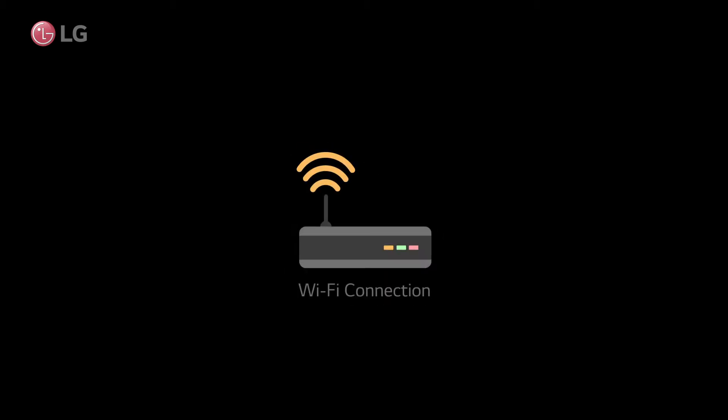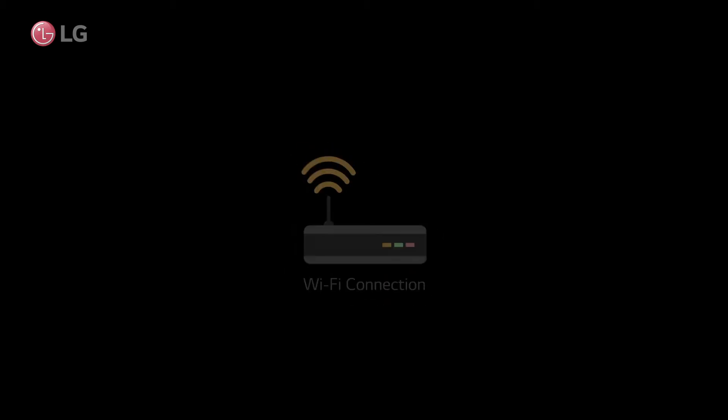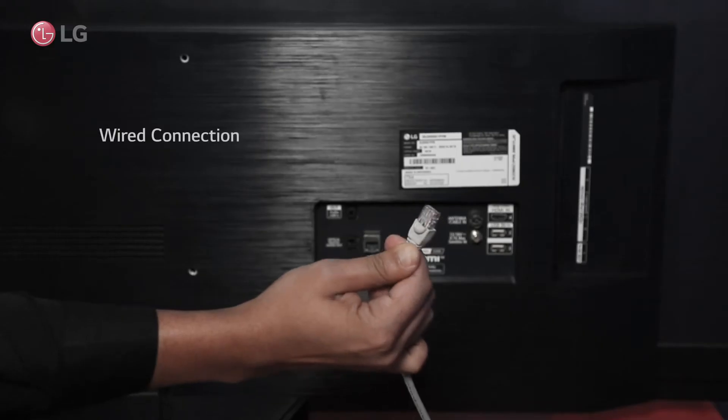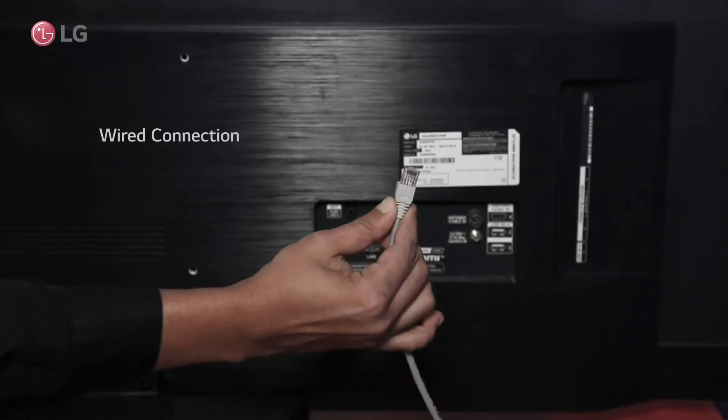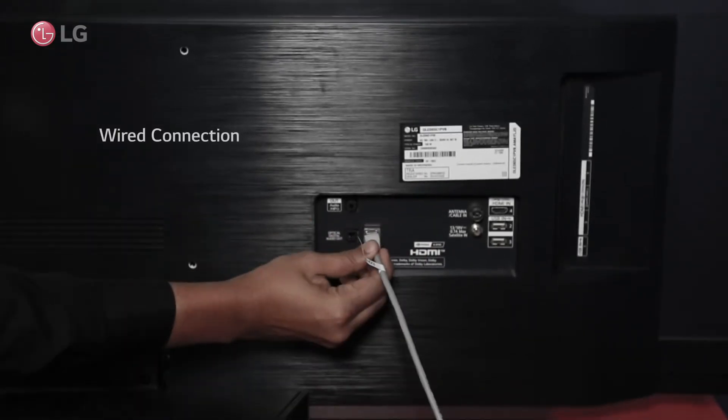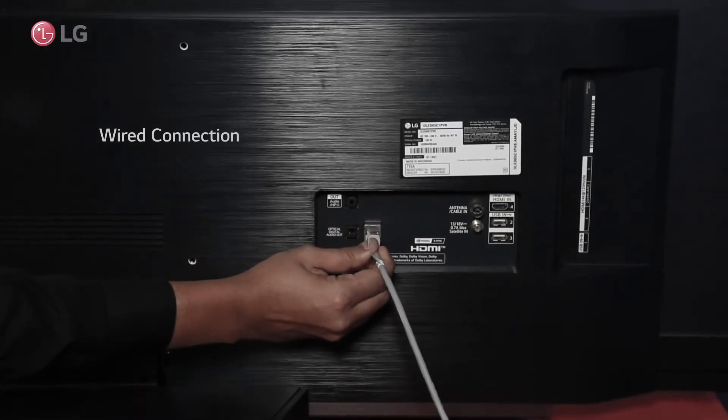There are two major ways to connect to the Internet. To use the network via wired connection, you must connect the LAN cable directly to the TV.